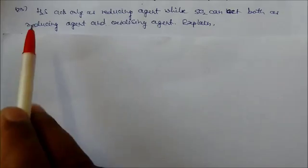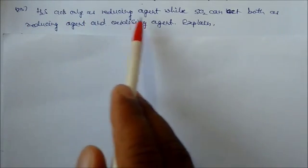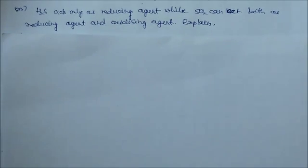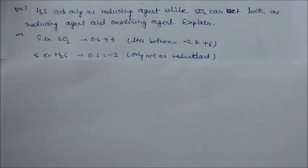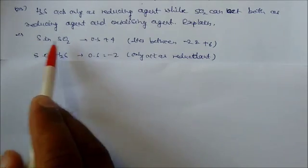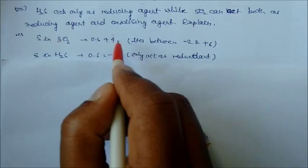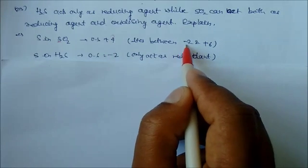Hydrogen sulfide acts only as a reducing agent, while sulfur dioxide can act both as reducing agent and oxidizing agent. In sulfur dioxide, the oxidation state is +4. This +4 lies between minimum and maximum oxidation states, so it can act as both.